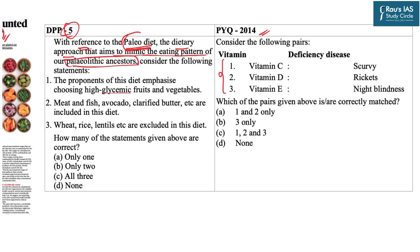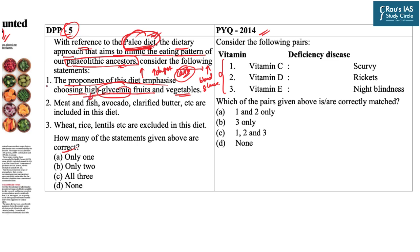Statement one says that proponents of this diet emphasize choosing high glycemic fruits and vegetables. Glycemic basically refers to the amount of carbohydrates present in food — higher glycemic content means faster digestion but also a faster increase in blood glucose levels. The paleo diet actually favors lower glycemic fruits and vegetables, not high ones. So statement one is incorrect.